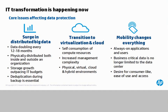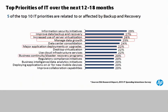Users expect that their applications will always be available, always be on. You have to be able to do backups and restores while data and application servers are actually in productive use. The Enterprise Storage Group does an annual survey about IT department priorities. Improving data backup and recovery was the second most important item listed. Almost all of the other items — increased use of server virtualization, major application deployments, business continuity and disaster recovery programs — also relate to or are affected by backup and recovery. It really is a top-of-mind topic within IT groups around the world today.